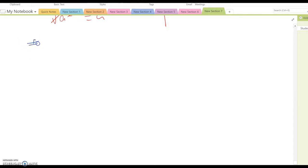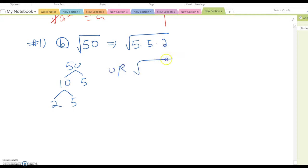Number 1: square root 50. We need to find the prime factorization of this problem. 50 means 10 times 5, and 10 means 2 times 5. So this becomes 5 times 5 times 2. You can rewrite this as 5 squared times 2, which means root 5 squared times root 2. This cancels out, so it becomes 5 root 2. That should be the answer.